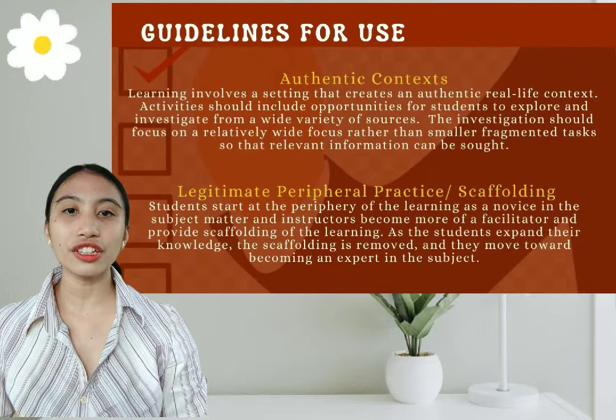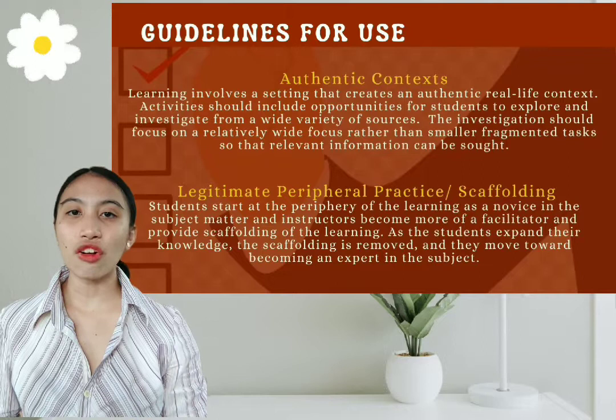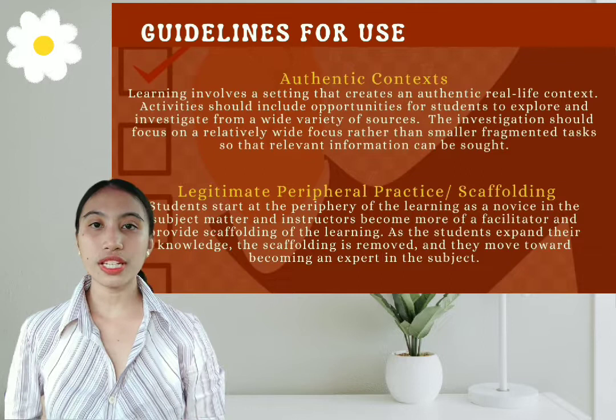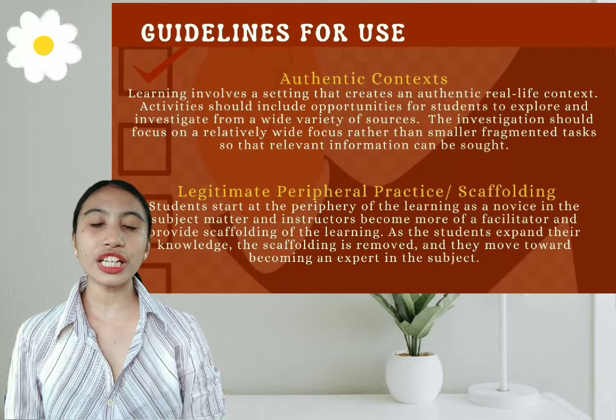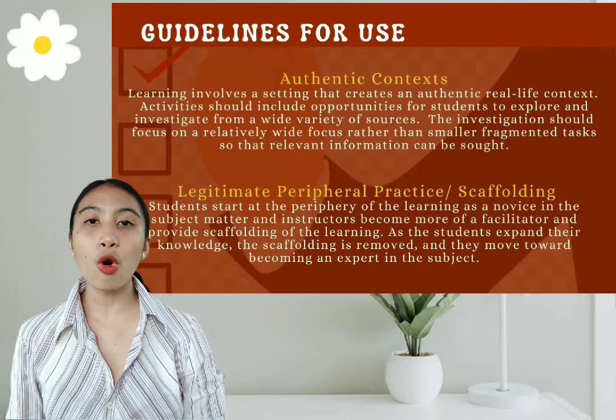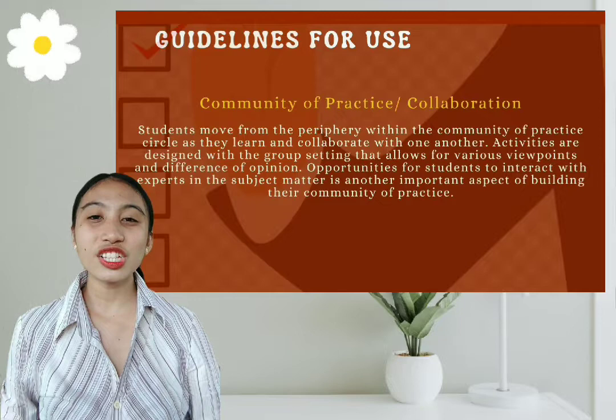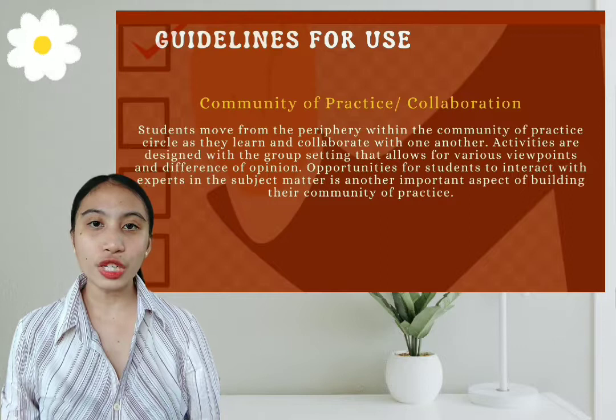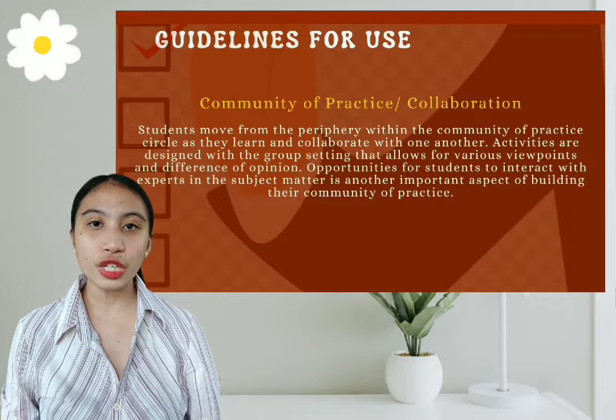There are three guidelines to effectively apply this theory. First is authentic context: learning involves a setting that creates an authentic, real-life context. Second is peripheral practice or scaffolding: students start at the periphery of learning as a novice and instructors become facilitators who provide scaffolding. Lastly is community of practice or collaboration: students move from the periphery within the community of practice as they learn and collaborate with one another.